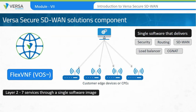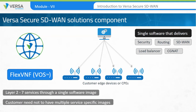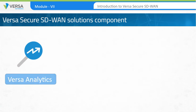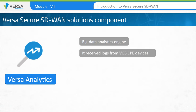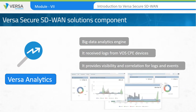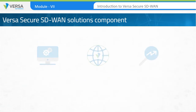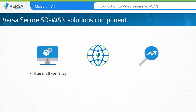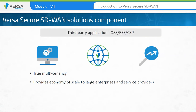Networking services from Layer 2 to Layer 7, all through a single software image — customers are not required to have multiple images for different types of service. Versa Analytics is the third component, which is the Big Data Analytics Engine. Once the solution is deployed and branches start operating, the Analytics Engine receives logs from the devices and saves them in a database. It provides visibility and correlation for network logs and events, which can be used for continuous improvement and to enhance the end user experience while having complete control over network operations. All of these components support true multi-tenancy, which provides economy of scale to large enterprises and service providers. Versa Director and Versa Analytics can communicate with third-party software over RESTful API for automation and can be easily integrated with a customer's infrastructure.